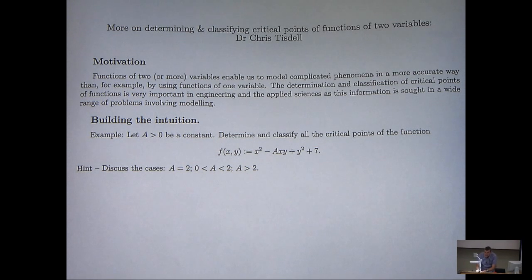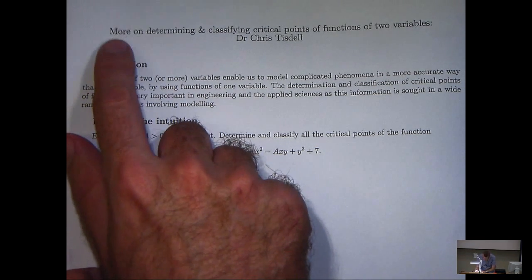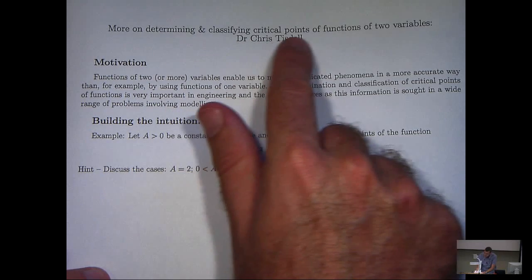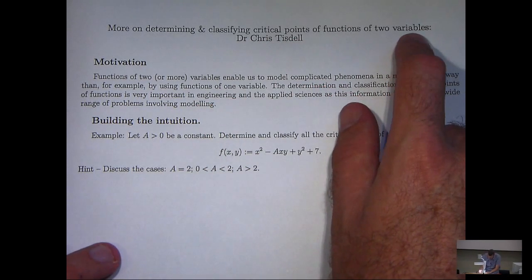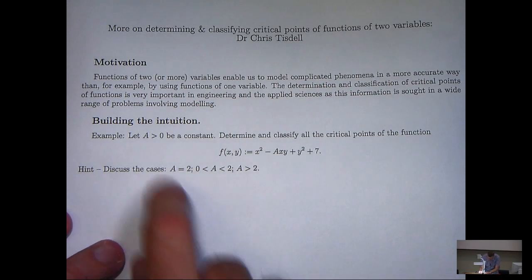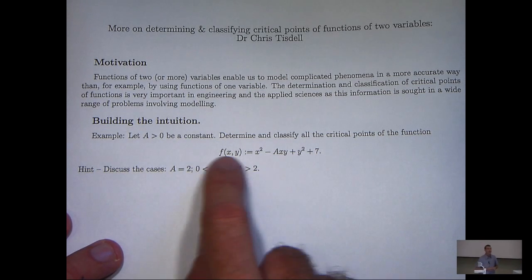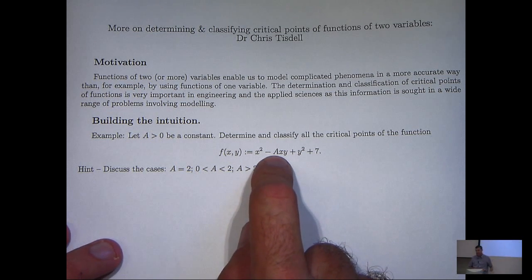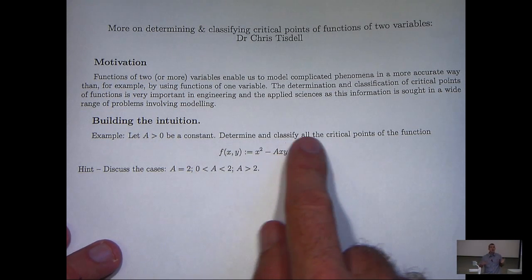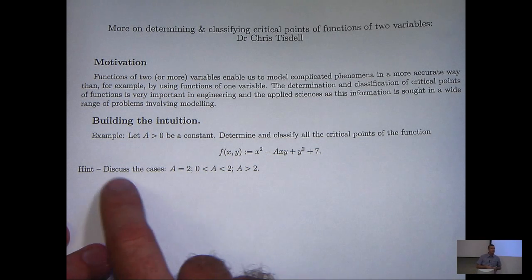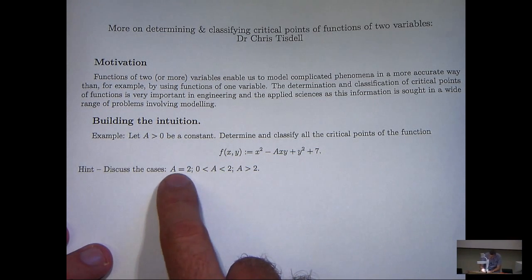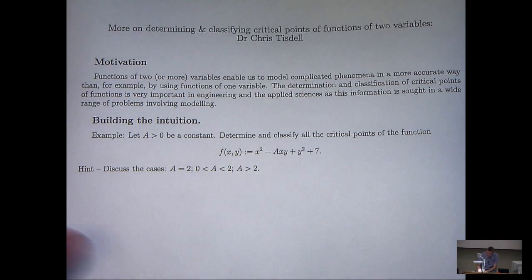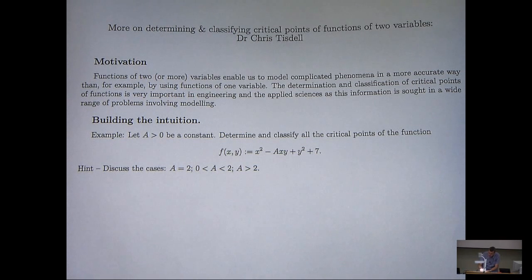Hi again everyone. In this video we're going to discuss more about determining and classifying critical points of functions of two variables. Now the example that we're going to look at involves the following f, where a is a positive constant, and we're asked to determine and classify all of the critical points of this function. A little hint: discuss the cases a equals two, a between zero and two, and a greater than two separately. This is a longer example and slightly more difficult than the standard examples you see in this area.